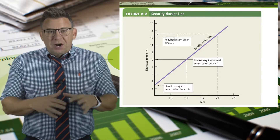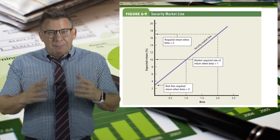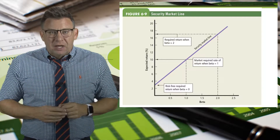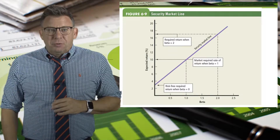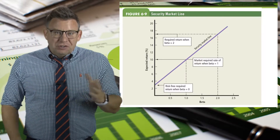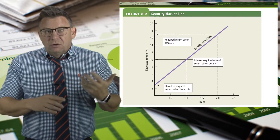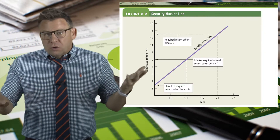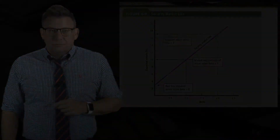We can create our own data points using the CAPM formula and solve for expected returns using different betas like 0, 1, or 2.